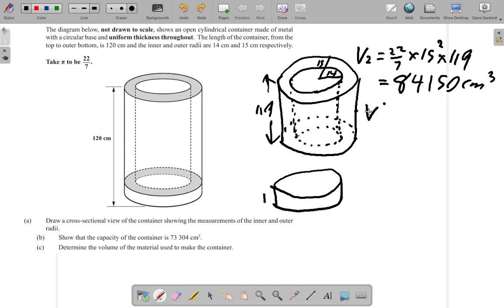Now the volume of the material for the top section, let's call that volume 3. It would be 73,304 minus—no this would be the larger figure. Let me put the larger figure on top. It would be the volume of the space plus material at this section so it would be 84,150 minus 73,304.